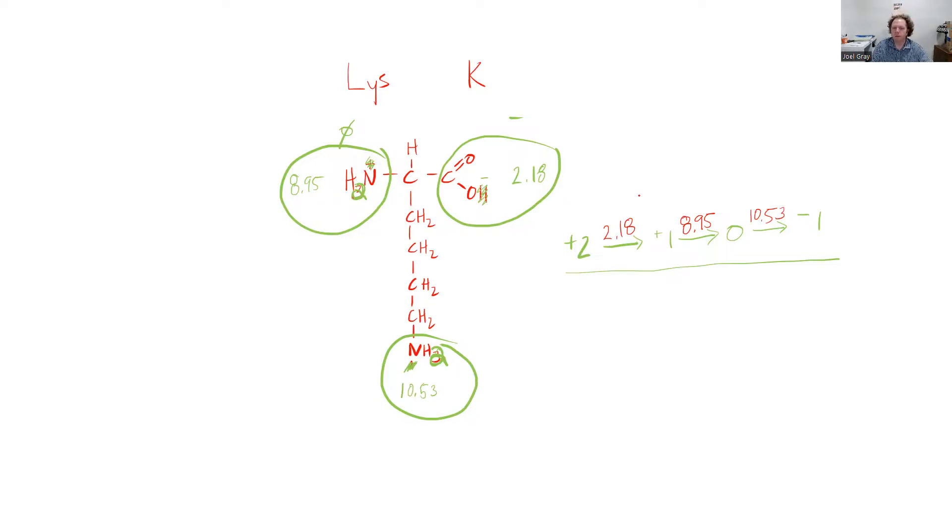When I'm calculating my pI, whether I'm doing an amino acid or a polypeptide, what I've done is I've mapped out my possible charges. Then I point out and figure out the ones that I actually care about.